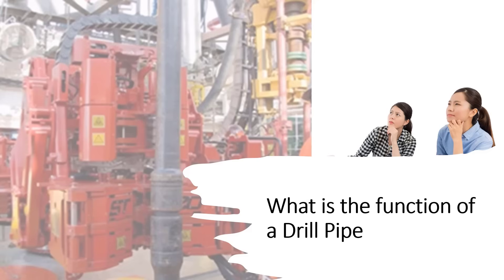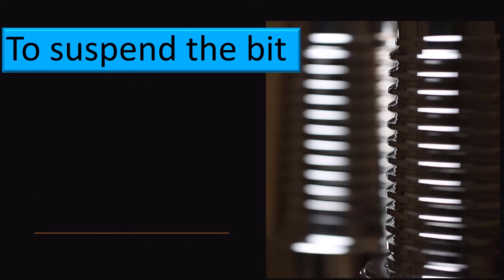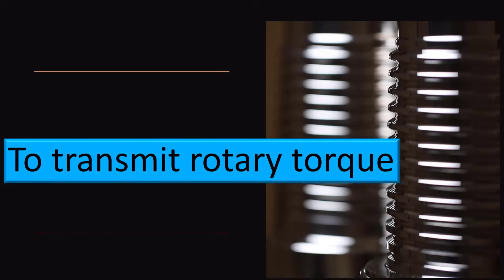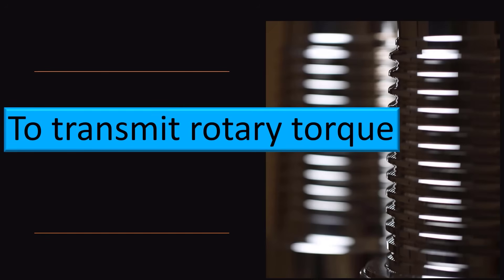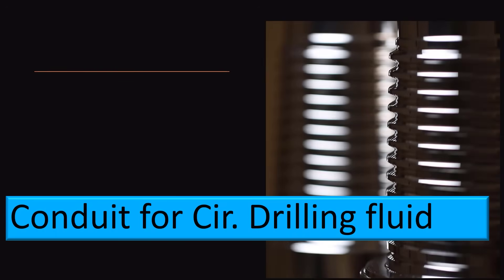The main functions of the drill string are to suspend the bit and bottom hole assembly, to transmit rotary torque from the top drive to the bit, and to provide a conduit for circulating drilling fluid to the bit. Proper selection and handling procedures are critical to maximizing drill pipe performance.